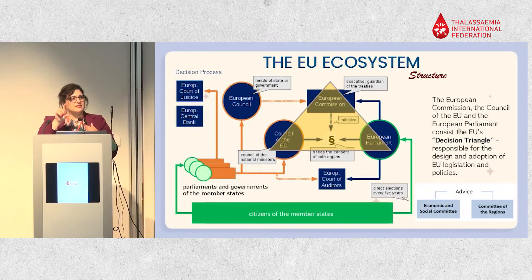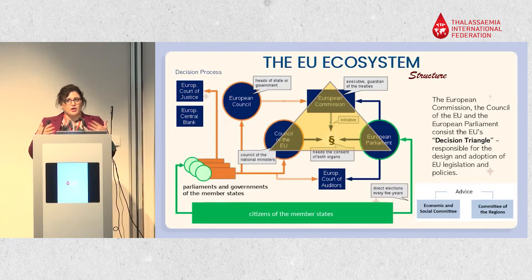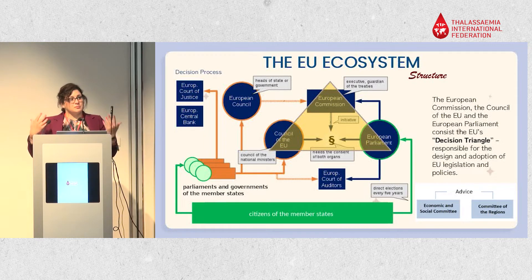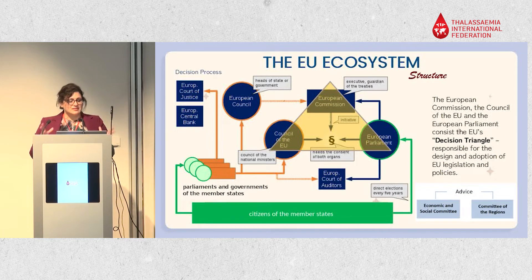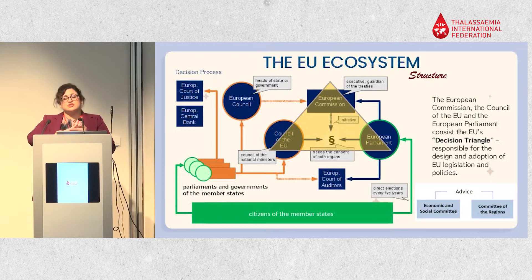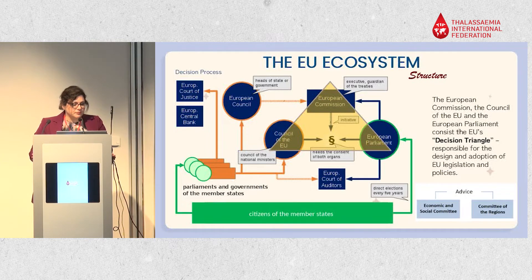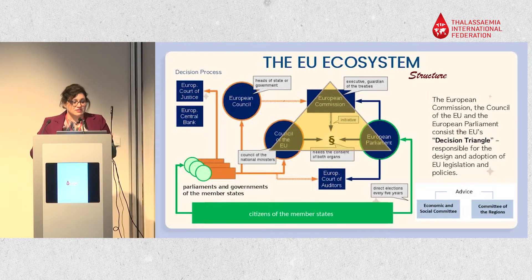The European Council consists of heads of different member states. When we have an agenda, the Commission is obliged to create a work program — on health in our case — then move to a legislative proposal, and create a policy that goes to the European Parliament and the Council of the EU to check that it aligns with EU treaties. It then goes back to the European Commission with the mandate to implement it.